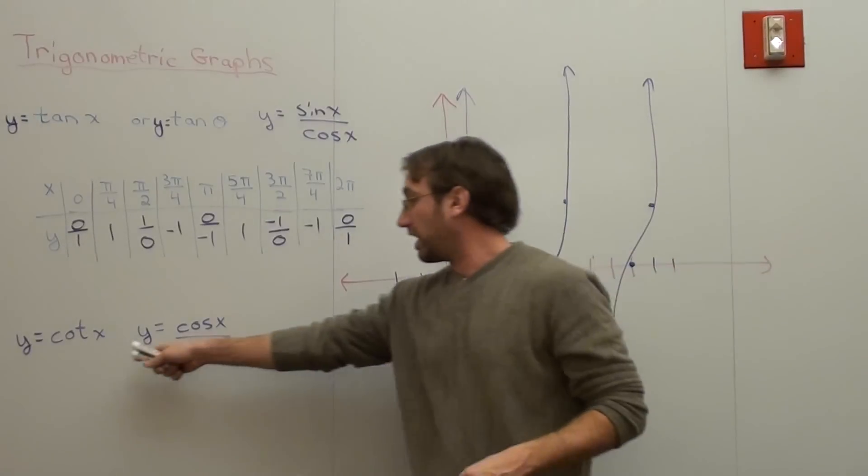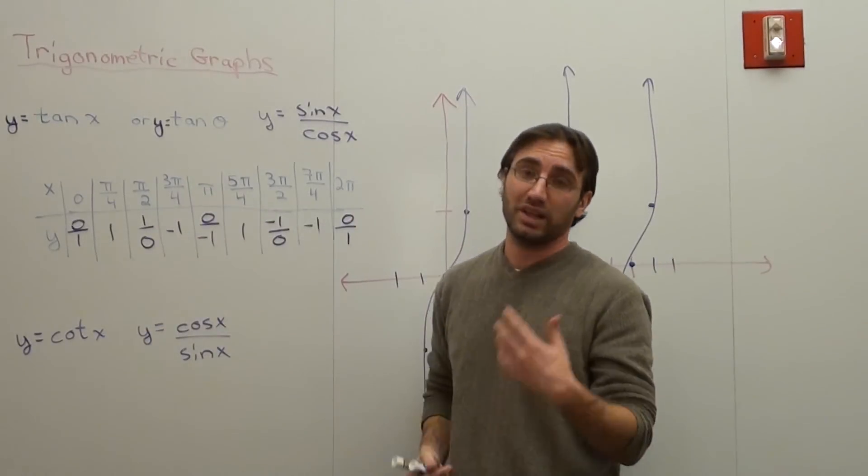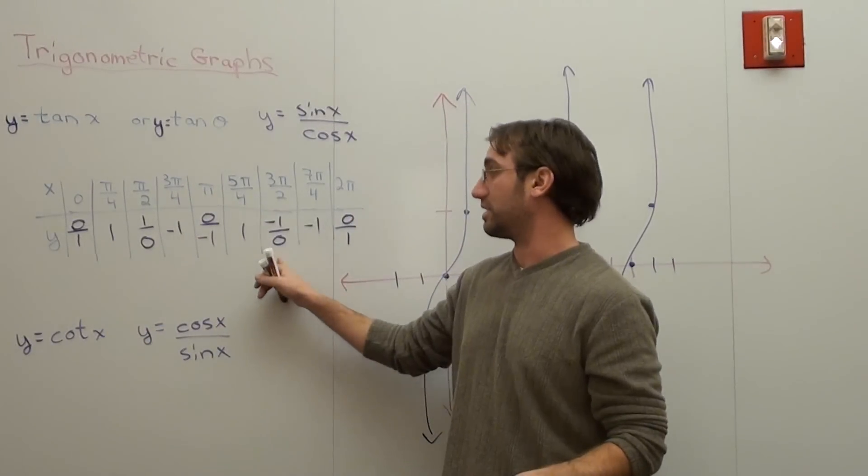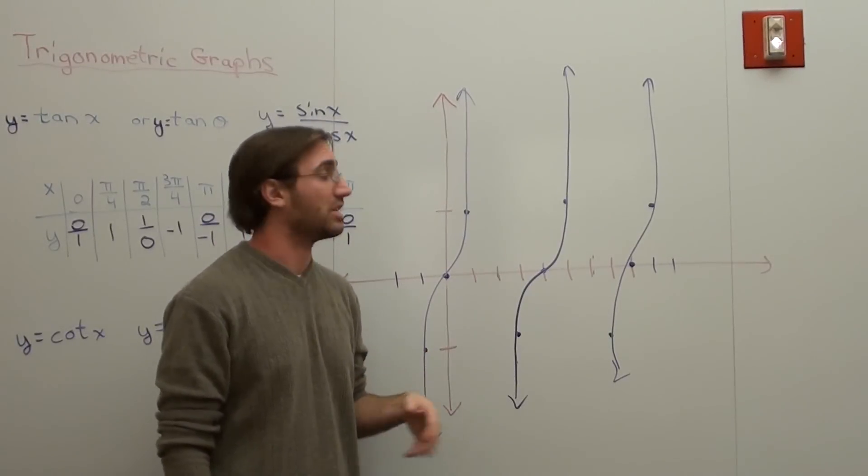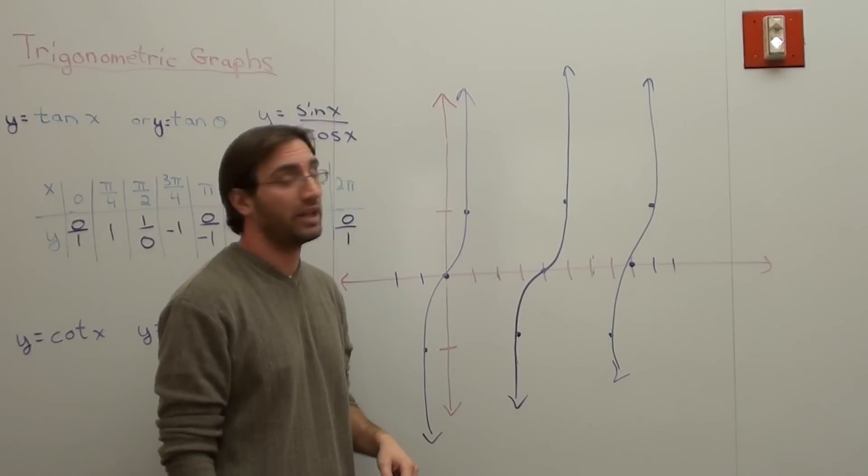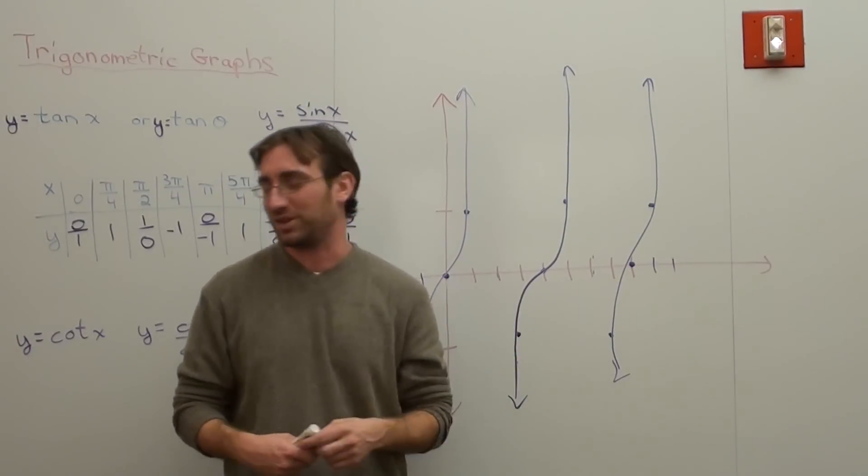Hello guys, we're going to be working with the cotangent graph this time instead of the tangent, but I left all the information up there about the table and the basic structure of the tangent because you get to see what happens. I erased the asymptotes of the tangent graph because we're going to have to have some new vertical asymptotes.